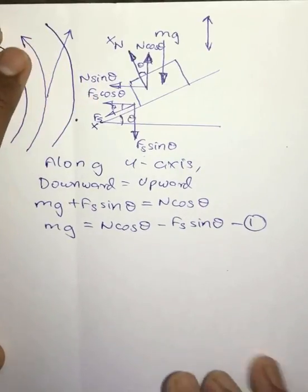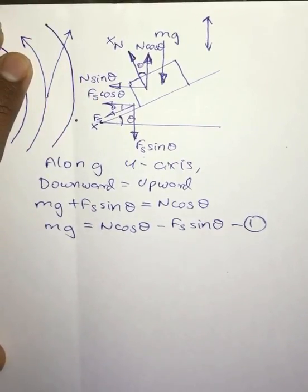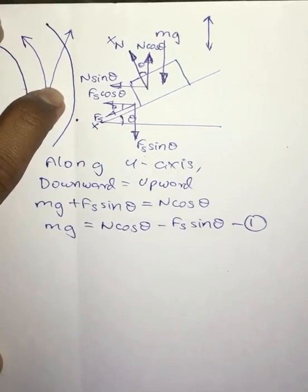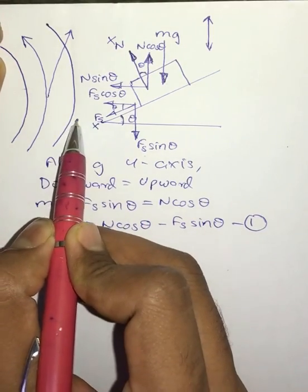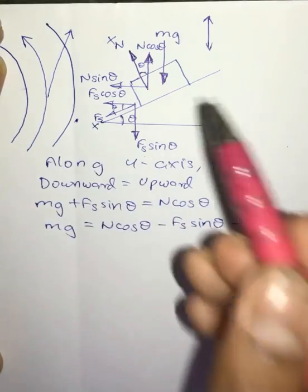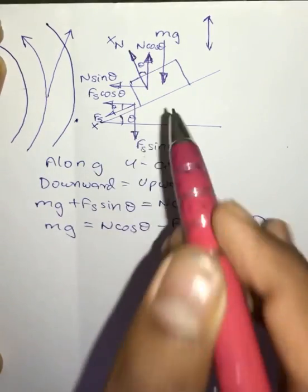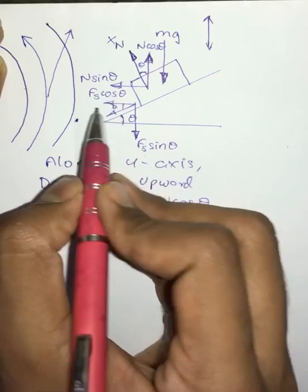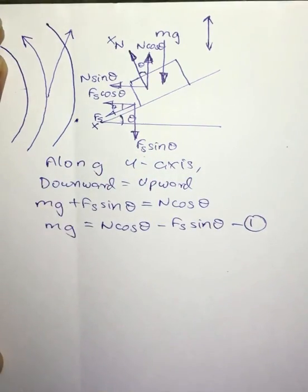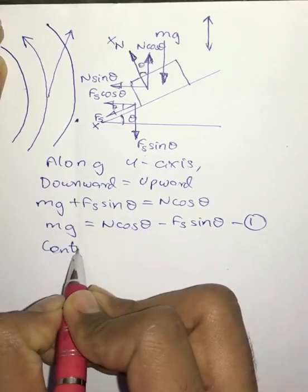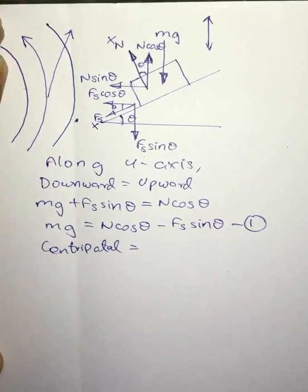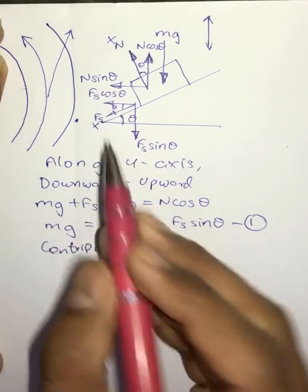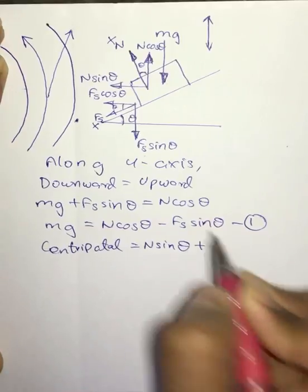In the previous model of this chapter we saw that centripetal force is the force which holds the body towards the center. Since the center is in the leftward direction, the body is held leftward. The forces acting in the leftward direction are due to centripetal force. Therefore, centripetal force = N sinθ + Fs cosθ, and this equals mv²/r. We will name this equation number two.